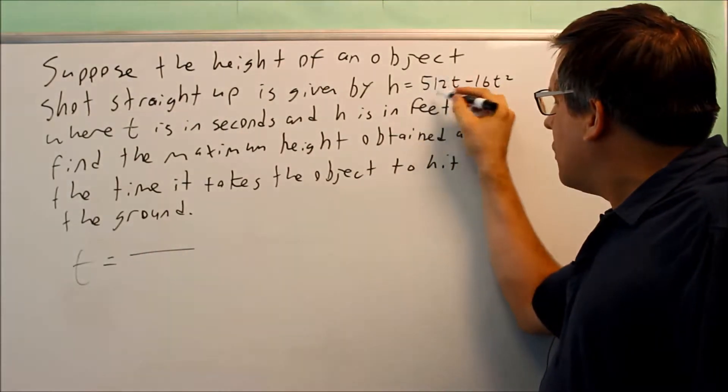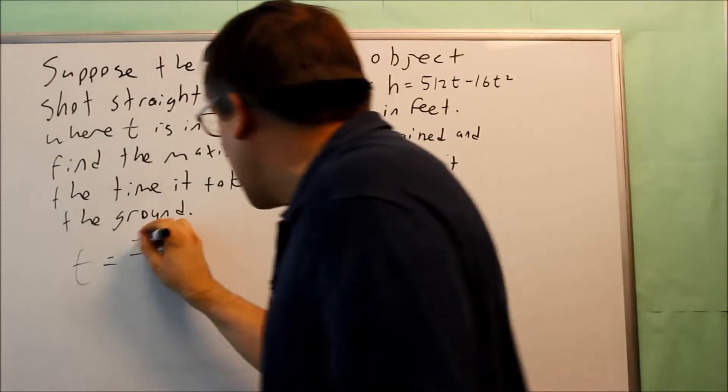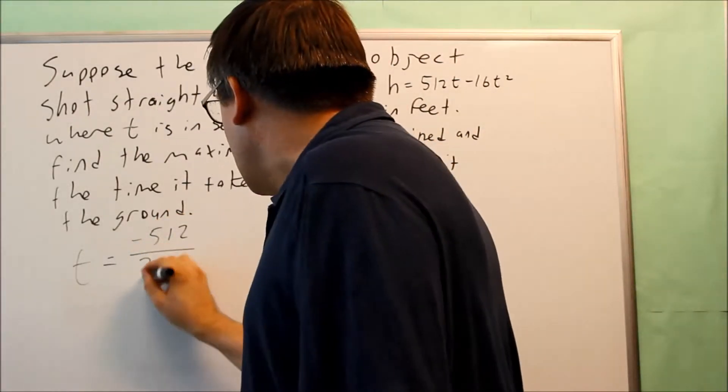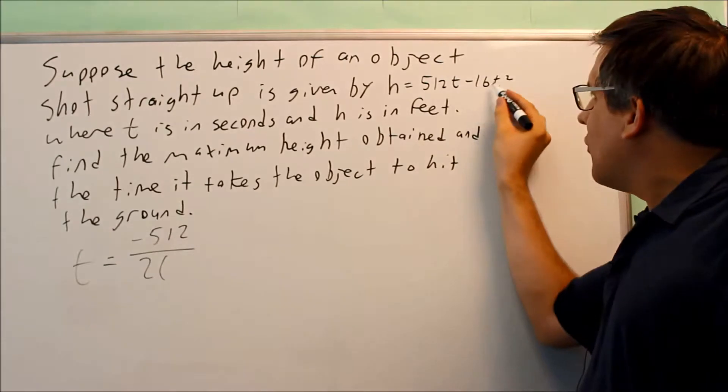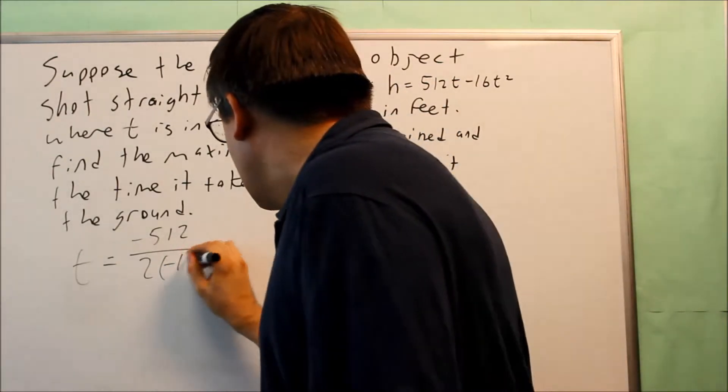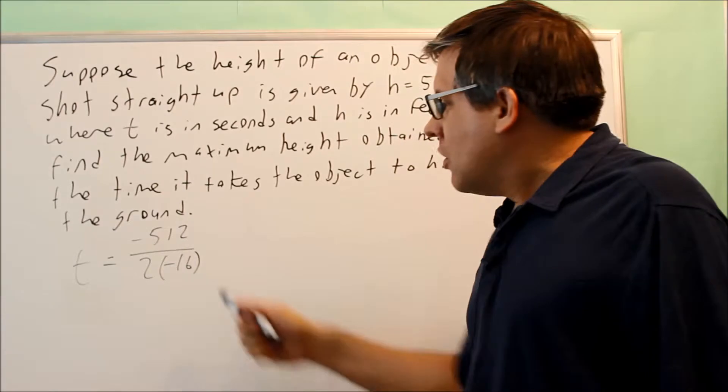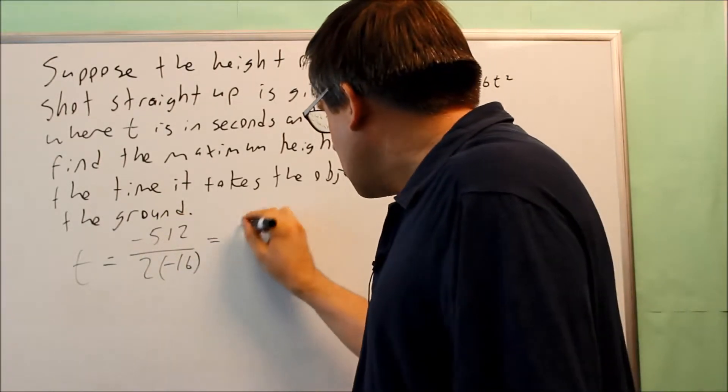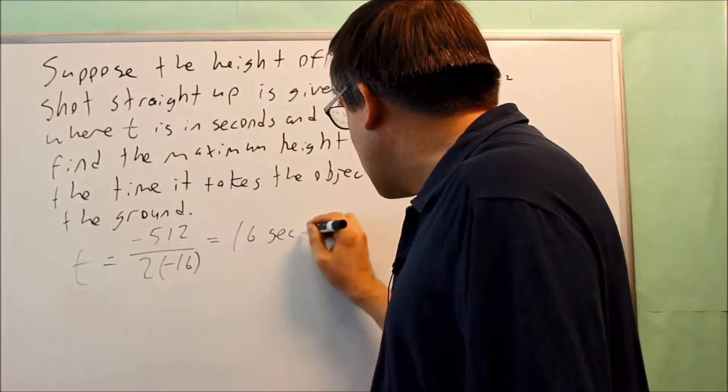So we have negative 512 over 2 times the a. The a value is negative 16. So if we do this, that's going to give us 16 seconds.